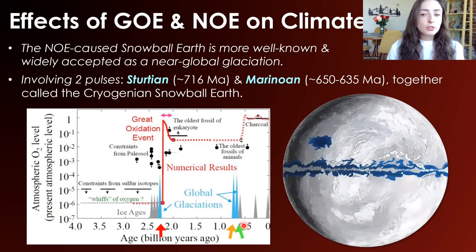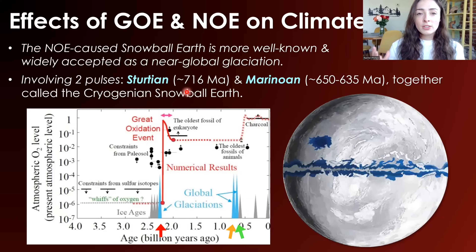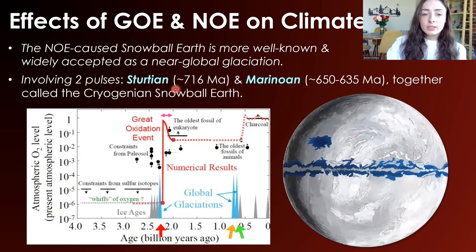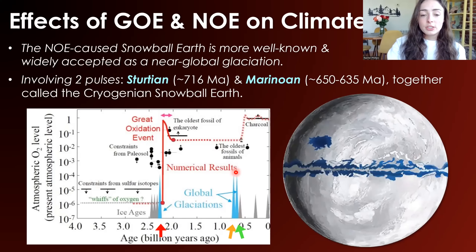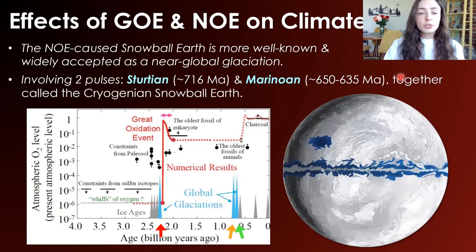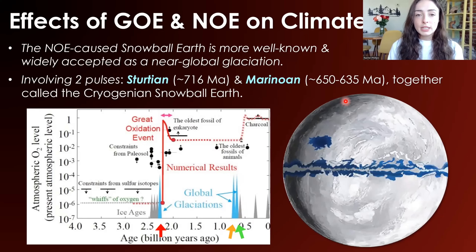This Snowball Earth event is called the Cryogenian Snowball Earth. However, it's actually two different glaciation pulses. One is called the Sturtian, which occurred around 716 million years ago. Then there was an interglacial period where the ice melted away a little bit, but immediately thereafter there was another spike in glaciation called the Marinoan, which occurred around 650 to 635 million years ago.